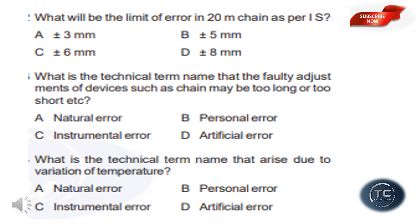What will be the limit of error in a 20m chain as per IS? In a 20m chain, the error limit is option B: plus or minus 5mm. What is the technical term for faulty adjustments of devices such as a chain that may be too long or too short? The answer is option C: instrumental error.